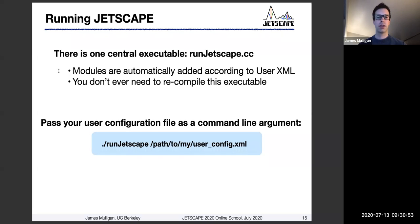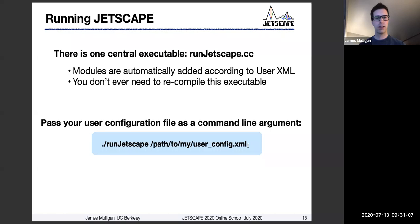The command that you would run is something like this: you execute the run_jetscape executable and then give it as a command line argument a path to your specific user XML file, which you customize to your liking. And if you want to run Jetscape in a different configuration with a different set of modules, all you do is pass a different XML configuration — but this executable and this way to run Jetscape remains exactly the same.